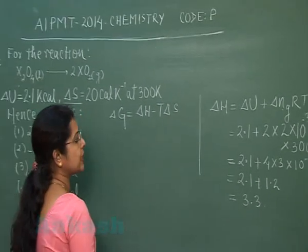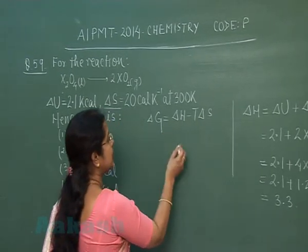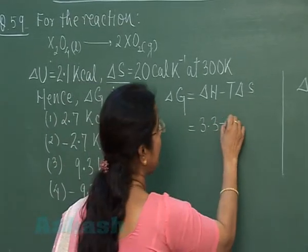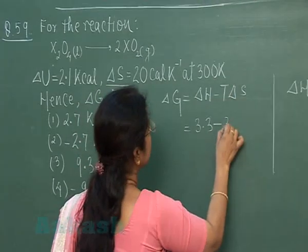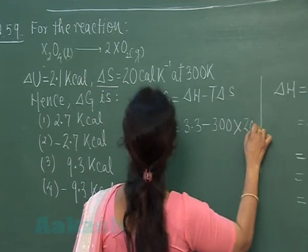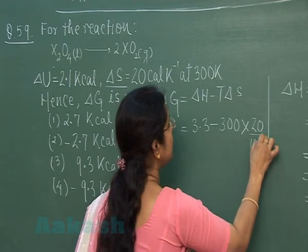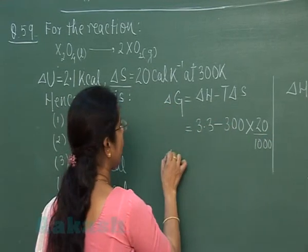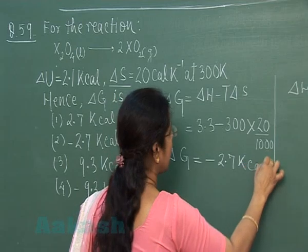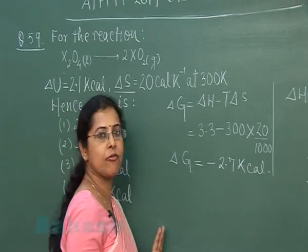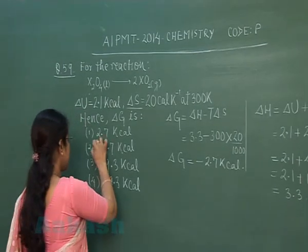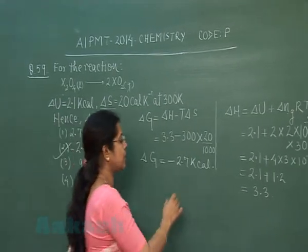So when we calculate ΔH, we then put the value of ΔH into the equation ΔG = ΔH − TΔS. Here ΔH is 3.3 kilocalories, T is 300 K, and entropy change is 20 calorie per Kelvin — we convert this to kilocalories. Solving it, ΔG comes out to −2.7 kilocalories. So the correct option must have the value −2.7 kilocalories, and that is the second option.